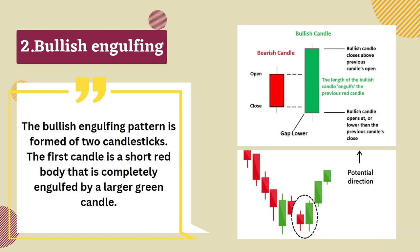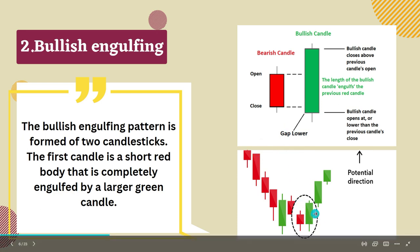The second pattern is bullish engulfing. The bullish engulfing pattern is formed of two candlesticks. The first candlestick is a short red body that is completely engulfed by a larger green candle.